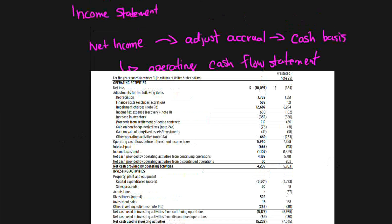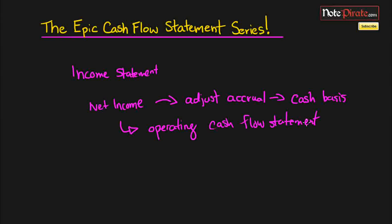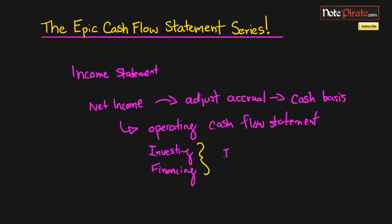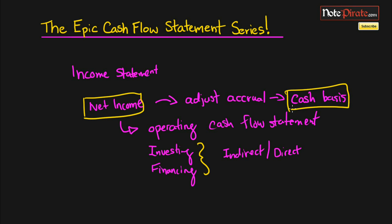The investing and financing parts — so we have the three parts: operating, investing, and financing. These two parts at the bottom are going to be the same regardless of whether it is the indirect or the direct approach. The only thing that's going to be different is the operating cash flow section, depending on whether we're using the indirect or the direct method. So just be prepared that we're going to be converting this net income figure into a cash basis figure, and we'll learn all about that over the next few videos.